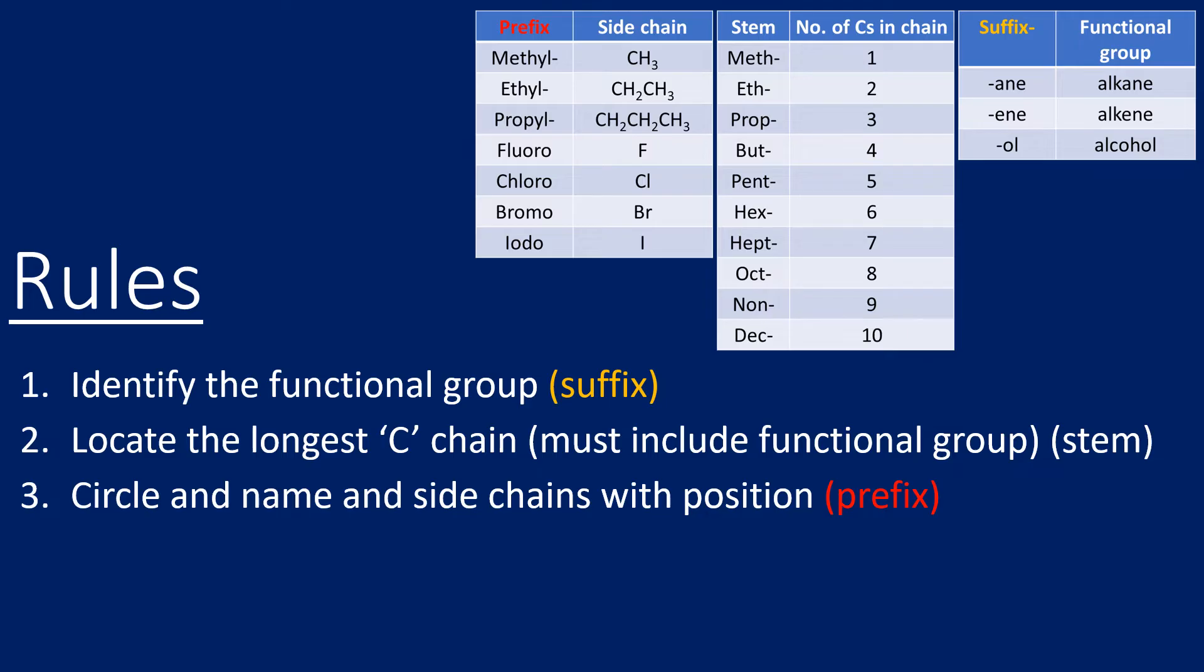The first thing is to identify the functional group, and it will either be an alkane, an alkene, or an alcohol. It could be a haloalkane, but remember that to name a haloalkane we actually use a prefix. We need to identify whether it's a haloalkane, an alkene, an alcohol, or an alkane, and we apply the correct suffix: -ane, -ene, or -ol.